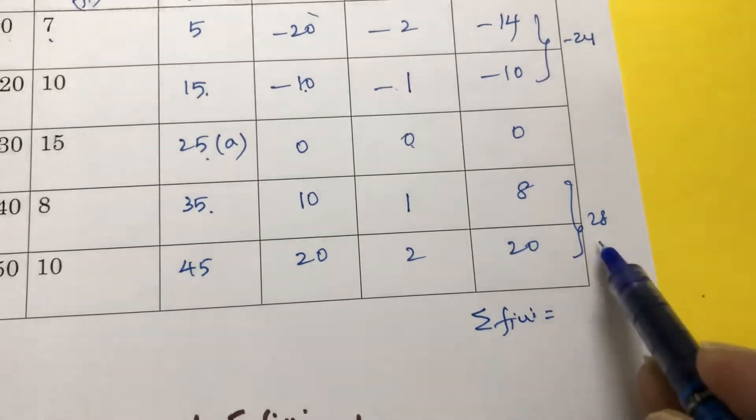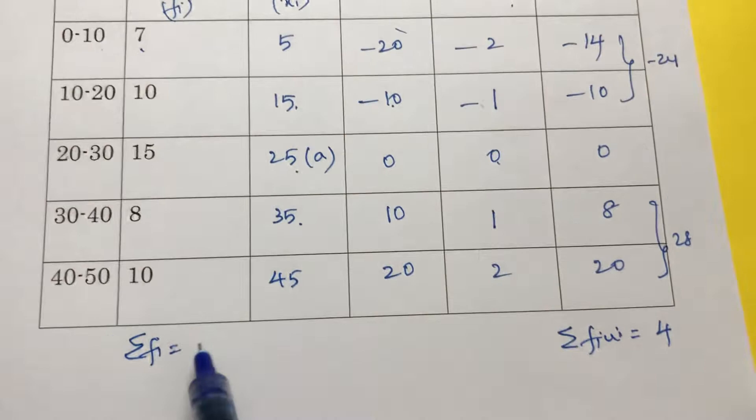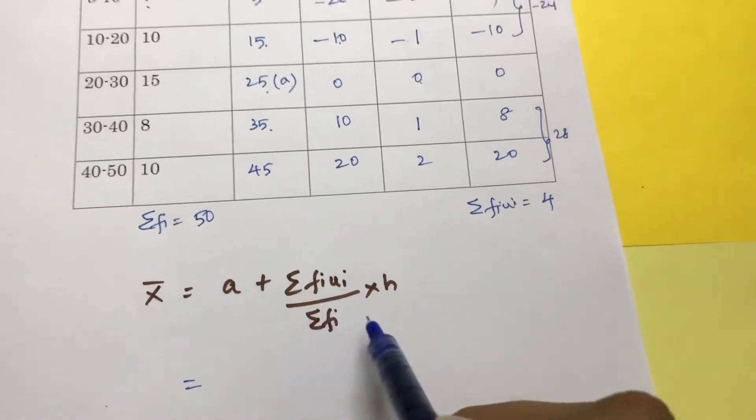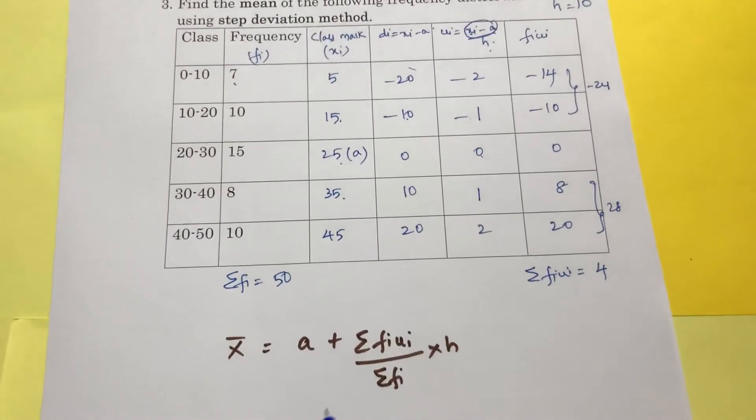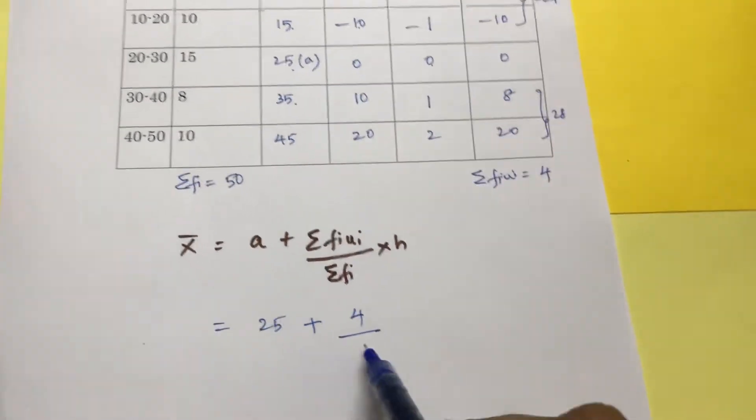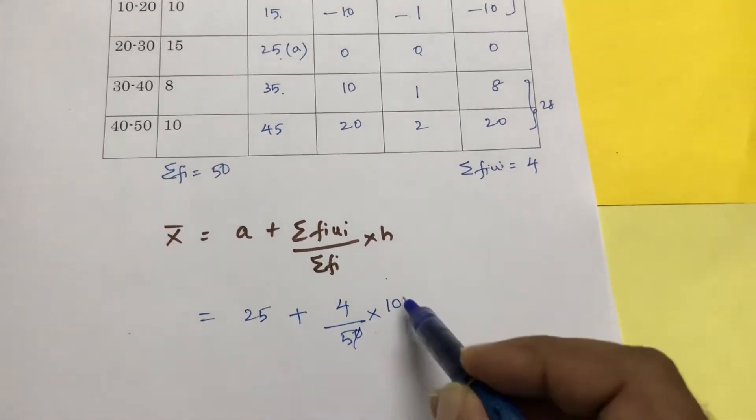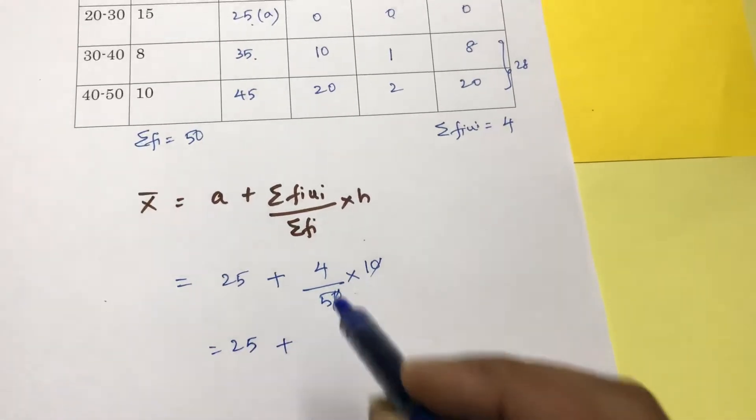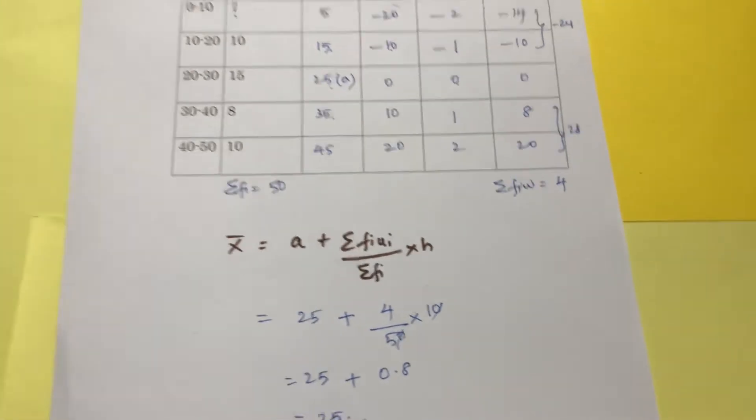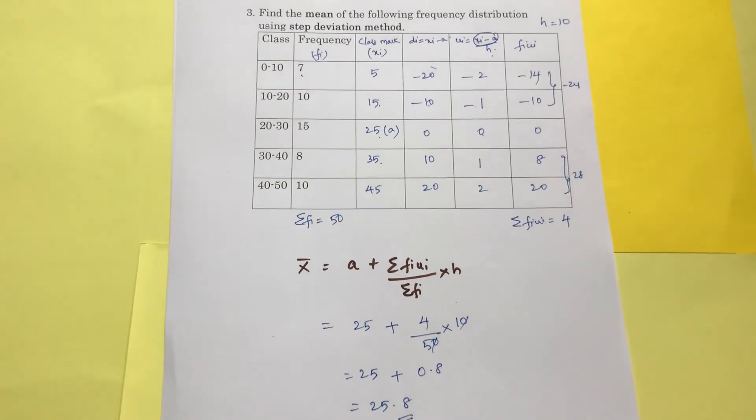Now substitute in the formula. This is the formula: a plus sigma fi ui by sigma fi into h. So a value is 25, sigma fi ui value is 4, sigma fi is 50, h is class size is 10. 25 plus 4 by 5 is 0.8. So 25.8 is the mean by using step deviation method.